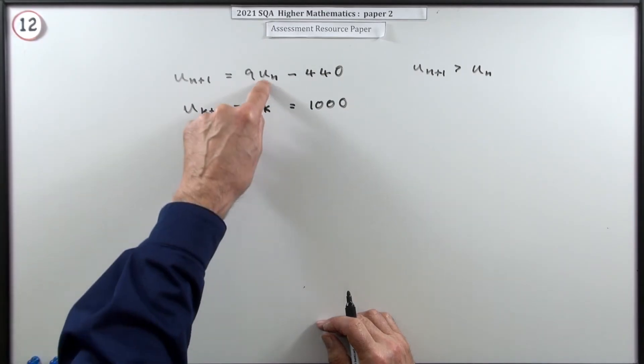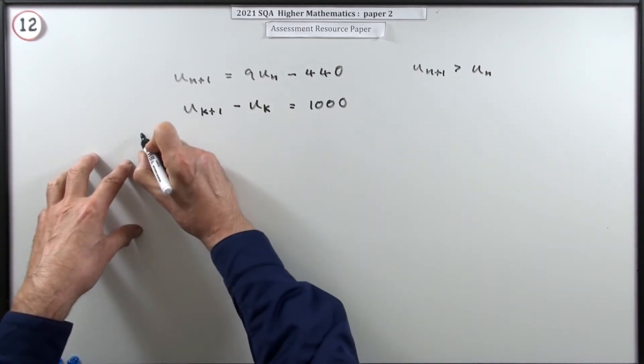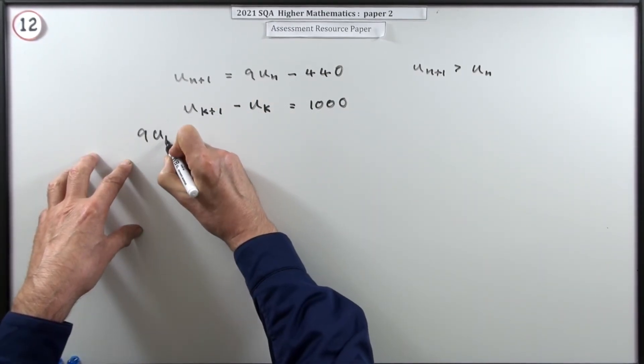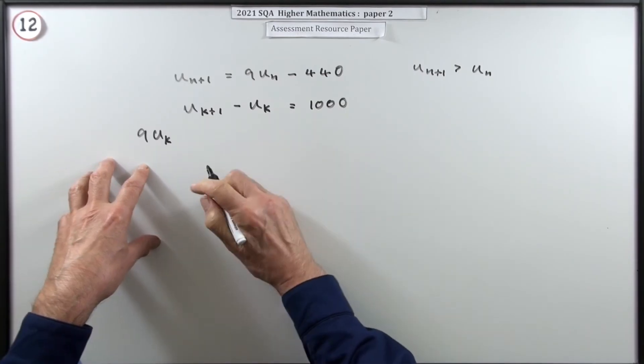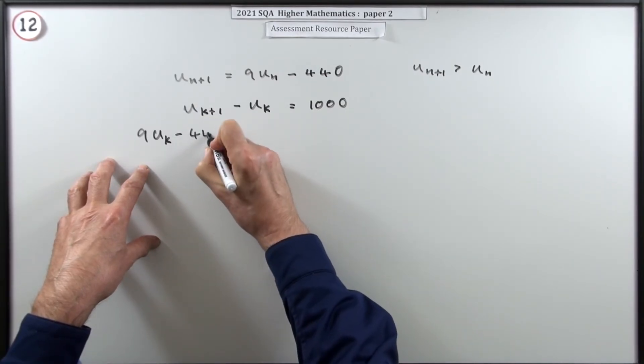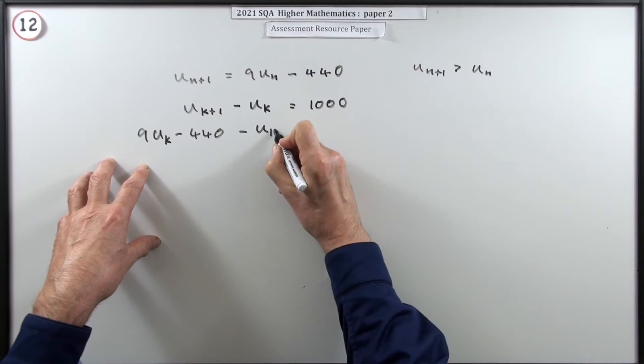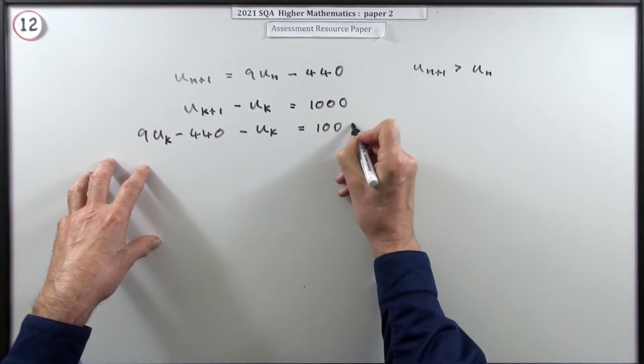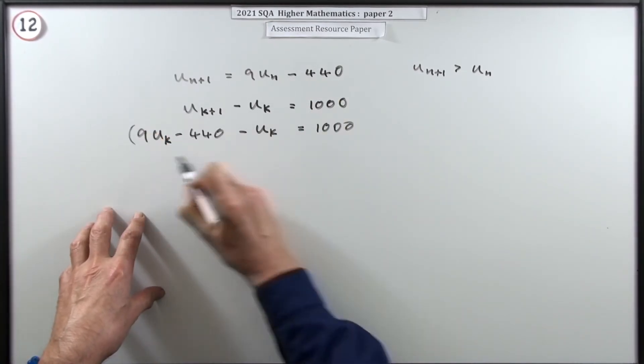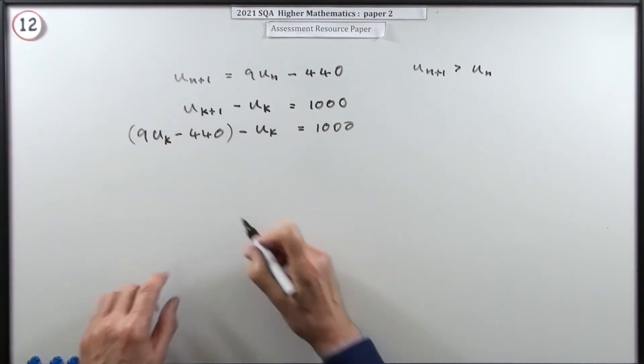You take this term and you do this to it. So this term here would be nine lots of the preceding term, that's the U_k, the one that I want, minus 440. That minus the U_k should be a thousand. You could even emphasize that I suppose by putting that in a bracket to show it came from there.